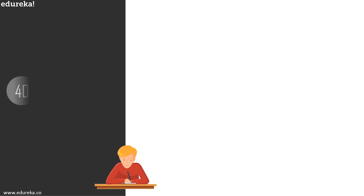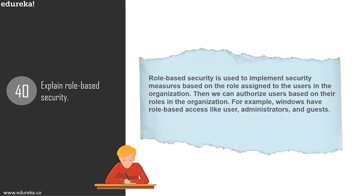Question 40: explain role-based security. Role-based security is used to implement security measures based on the role assigned to users in the organization. You can authorize users based on their roles. For example, in Windows there are role-based access levels such as User, Admin, and Guest — a simple example of role-based security applicable in applications as well.